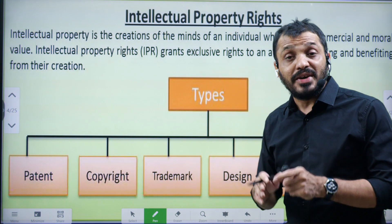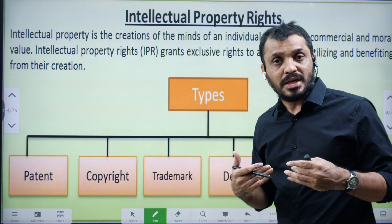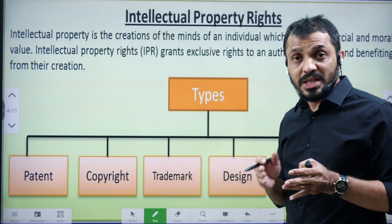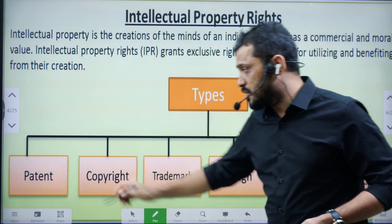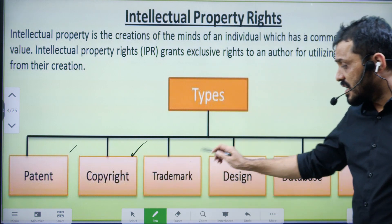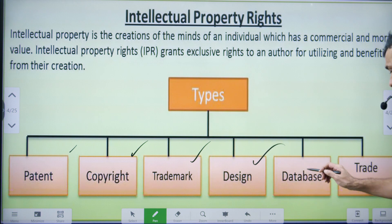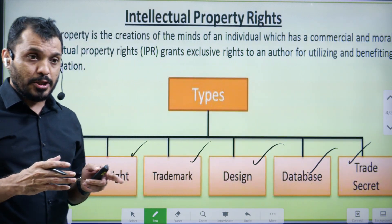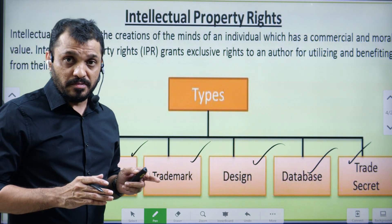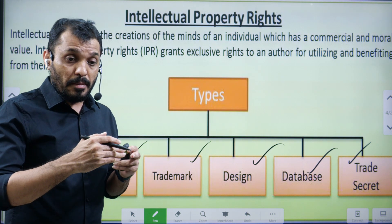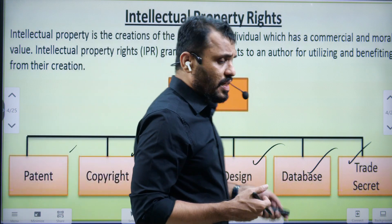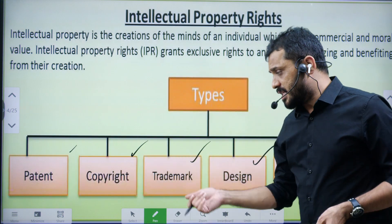Intellectual property rights can vary based on the product we are talking about and the protection we are seeking. Intellectual property rights can be classified into patent, copyrights, trademarks, designs, database, and trade secrets. Trade secrets are related to situations where a particular product involves limited information that should be protected from the outside world. Patent, copyright, and the rest are very common.